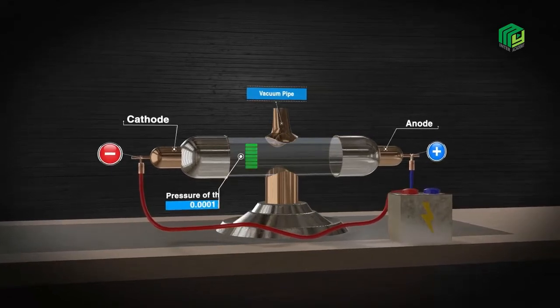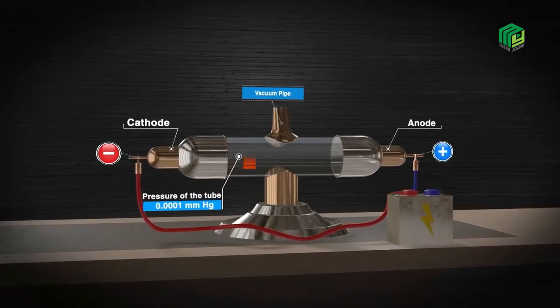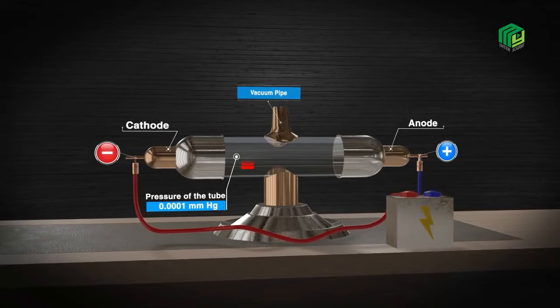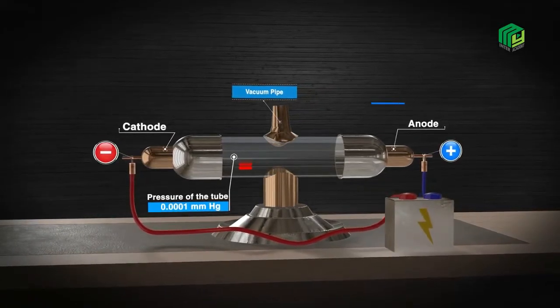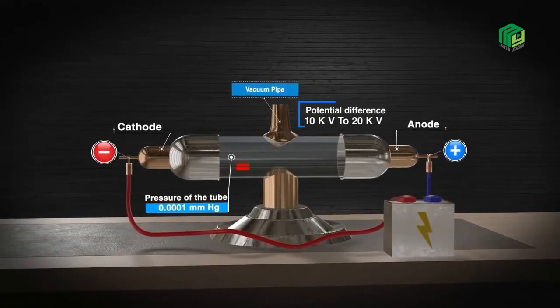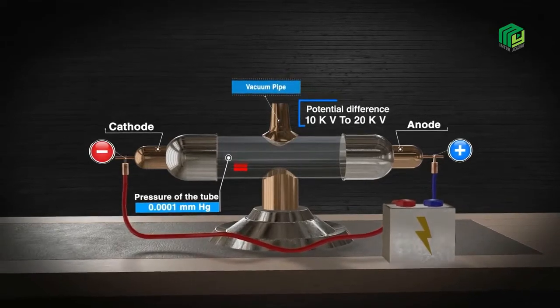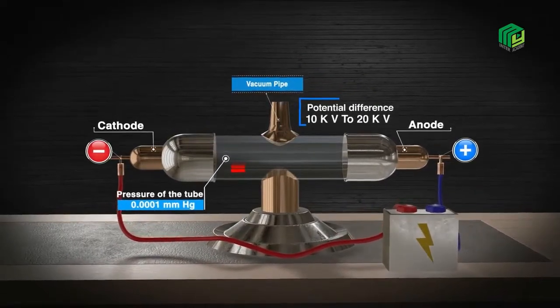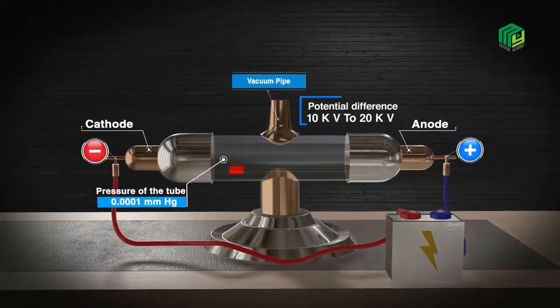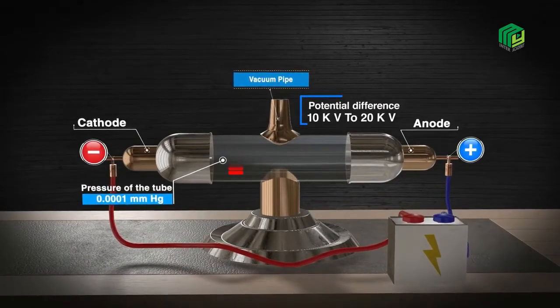However, when the pressure of the tube was reduced to 0.001 mmHg and a high potential difference between 10 kV and 20 kV was applied, at the end of the tube, a glow was seen on the walls of the glass tube.